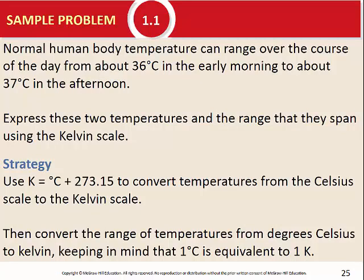Normal human body temperature can range over the course of the day from about 36 degrees Celsius in the early morning to about 37 degrees Celsius in the afternoon. Express these two temperatures and the range they span using the Kelvin scale. This is Sample Problem 1.1, shown in Chapter 1 of your textbook.